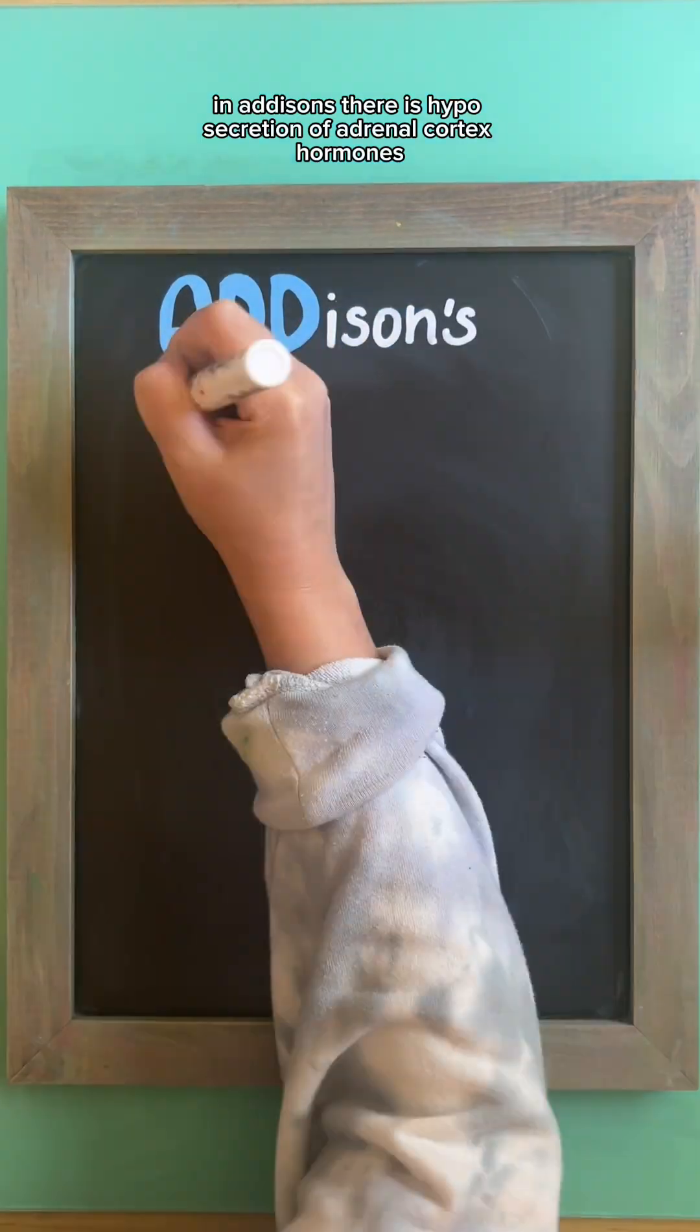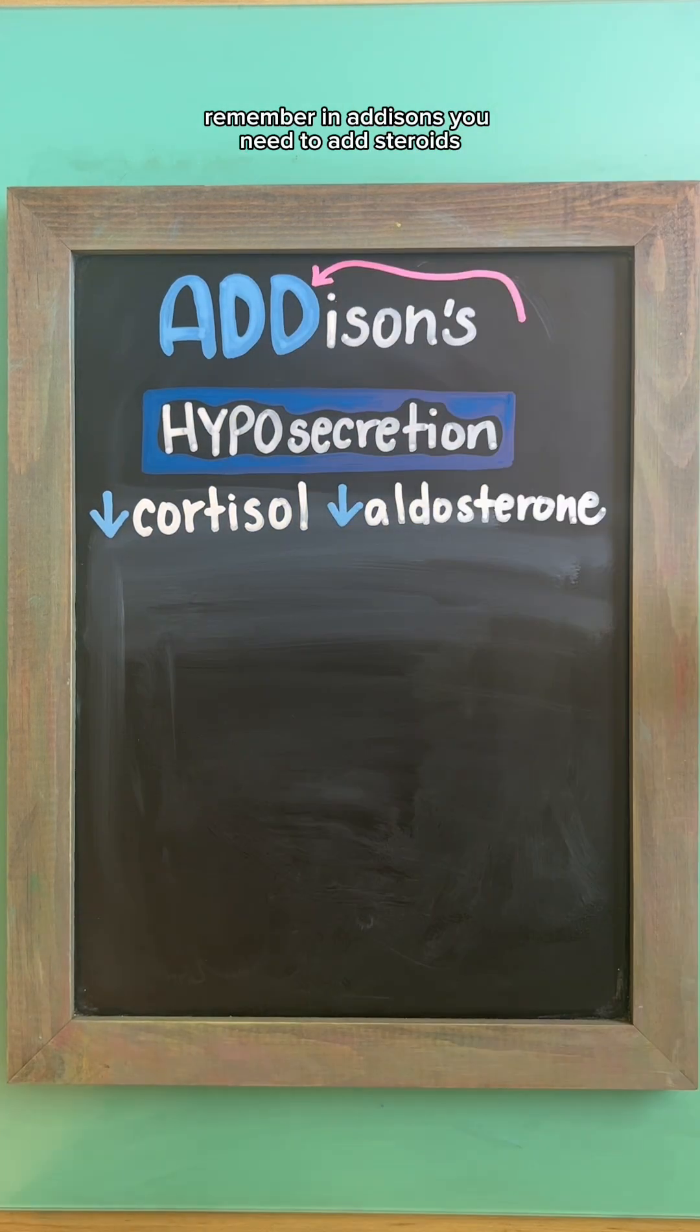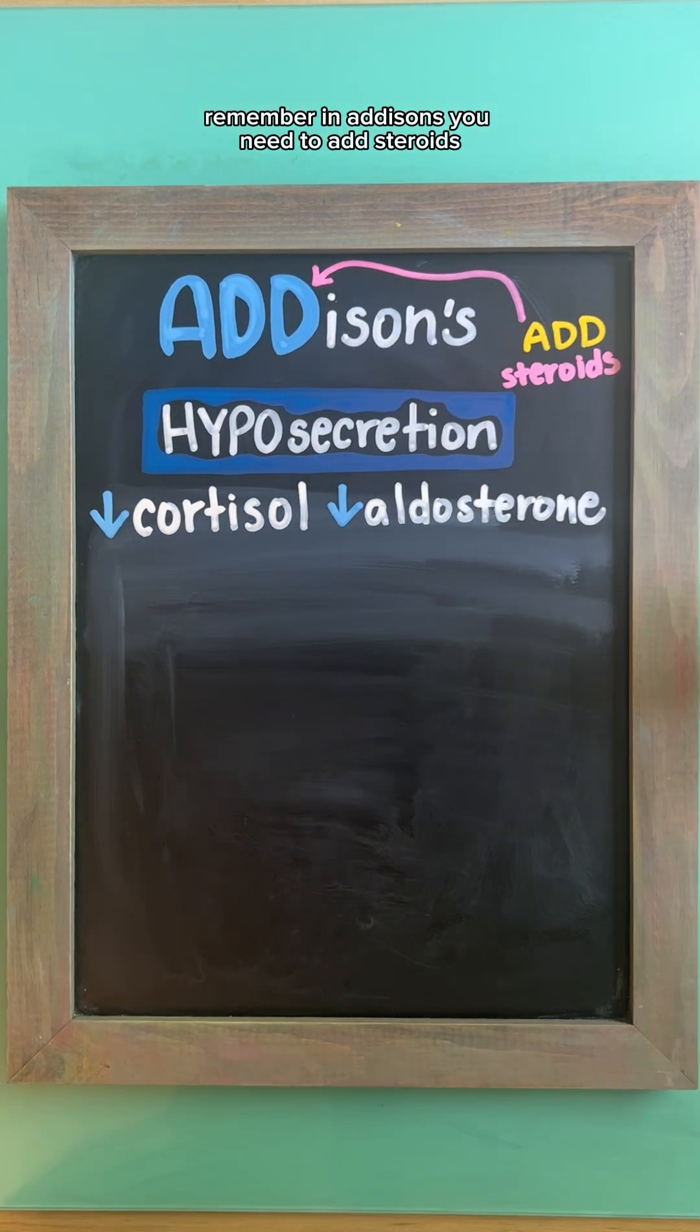In Addison's, there is hyposecretion of adrenal cortex hormones, mainly being cortisol and aldosterone. Remember, in Addison's, you need to add steroids.